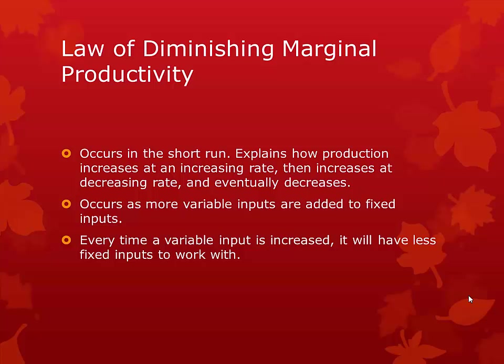This is because the more variable inputs are added, the less fixed inputs each variable input has to work with. Think about a factory. If I have one worker and I hire a second, I will get a lot more output. If I hire a third, I could probably get even more marginal output than the second, because there are enough people to specialize. Right now production is increasing at an increasing rate.